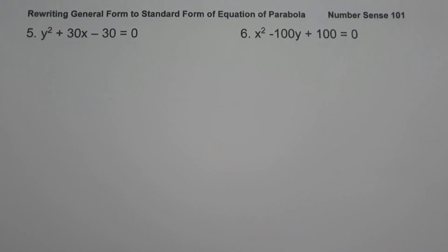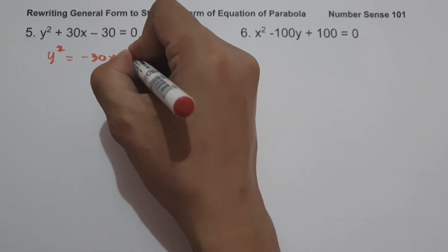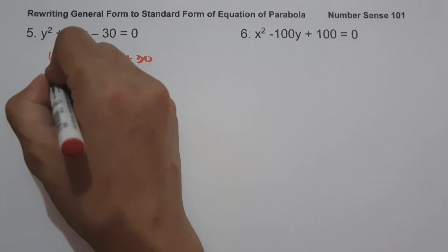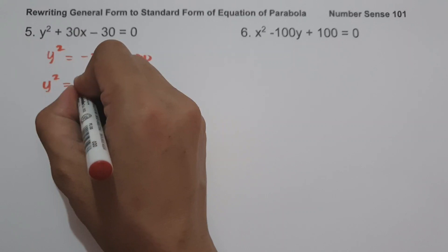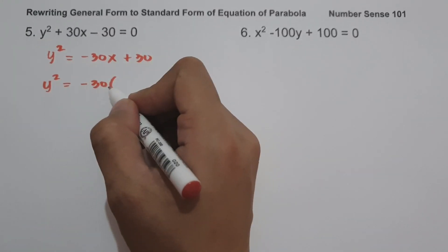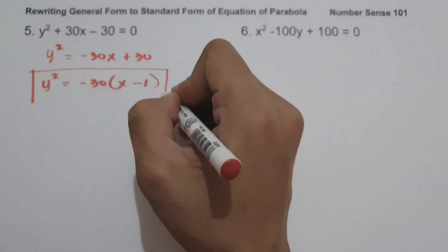In example number 5, we have y² + 30x - 30 = 0. To convert into standard form, let us move 30x and -30 to the other side. So this will be y² = -30x + 30. The greatest common factor between -30x and +30 is -30. Dividing: -30x ÷ -30 = x, and 30 ÷ -30 = -1. So the standard form is y² = -30(x - 1).